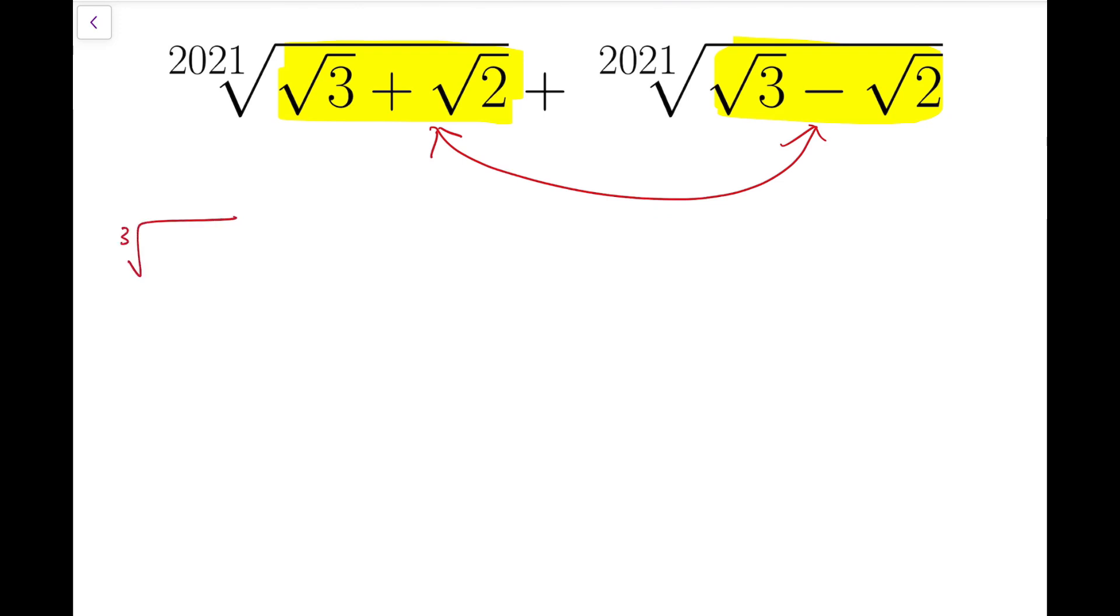Here's an example: the cube root of 2 plus root 5, plus the cube root of 2 minus root 5, is actually rational, and in fact, this number is equal to 1. You can try this on your own.